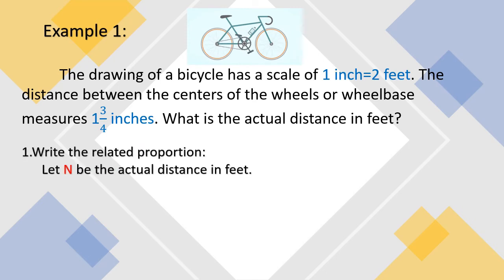First, we have to write the related proportion. Then let N be the actual distance in feet. So, 1 inch to 2 feet is our scale. That is equal to 1 and 3 fourths inches. This fraction form may be written in decimal form. So we may use 1.75 to N feet. We are finding N with a unit of feet.